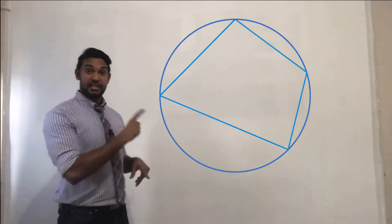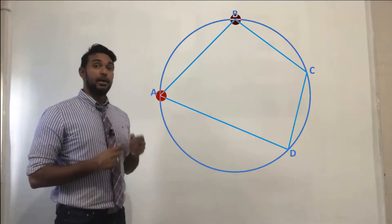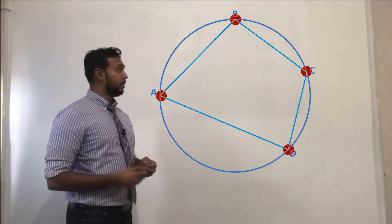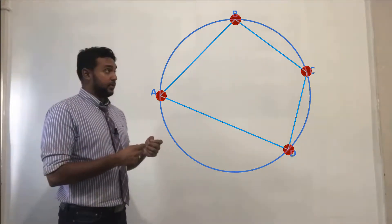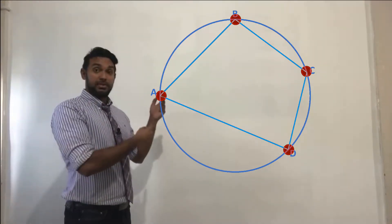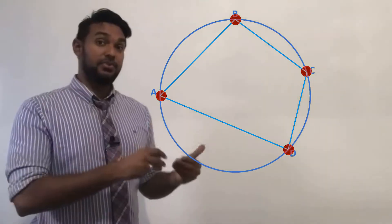And let's label the vertices A, B, C, D. And I want you to notice that all of the vertices lie on the circumference of the circle. If any of the vertices or more than one of them do not lie on the circumference, they lie inside the circle or outside the circle, then that shape would not be a cyclic quadrilateral and this rule would not apply.